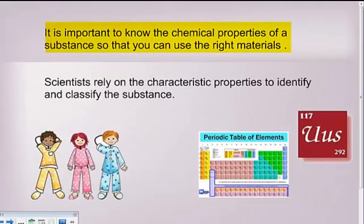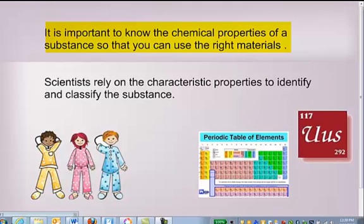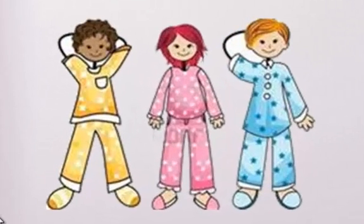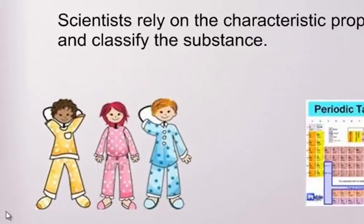It's important to know what the chemical properties of a substance is so that you could use the right materials. When you look at kids' pajamas, if you look at the tags, they use special substances now that are non-flammable. And that's important because in the middle of the night, if you have a kid in their pajamas and there's a house fire, you don't want their pajamas to catch on fire. So they use some materials that contain chemicals that are non-flammable, so hopefully that their pajamas won't catch on fire.